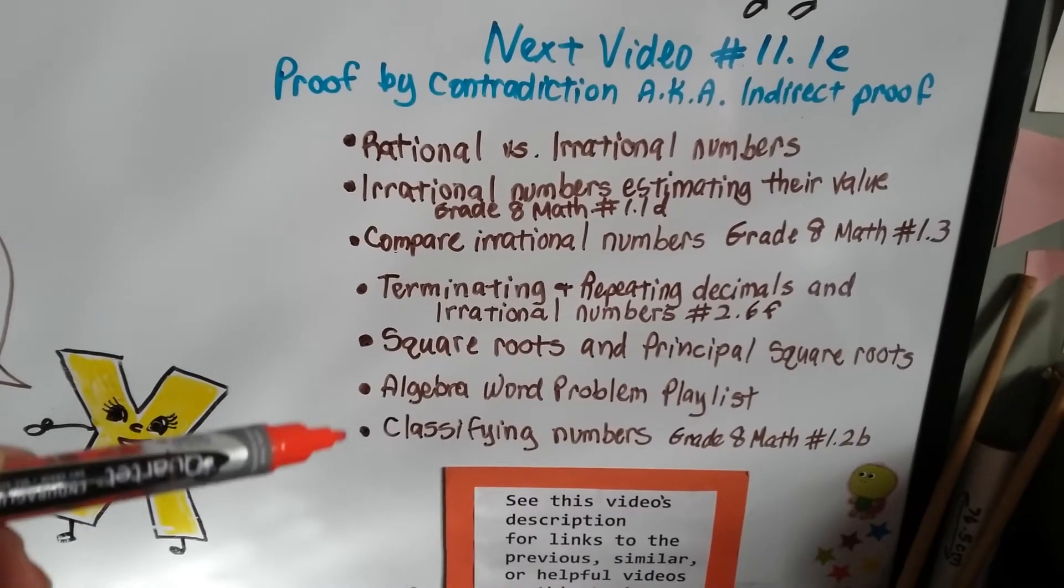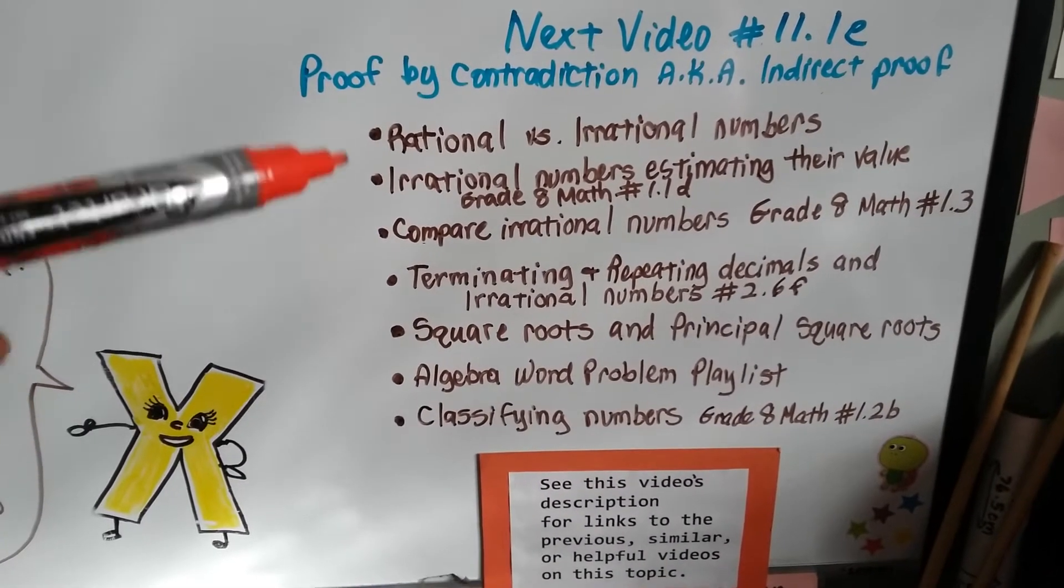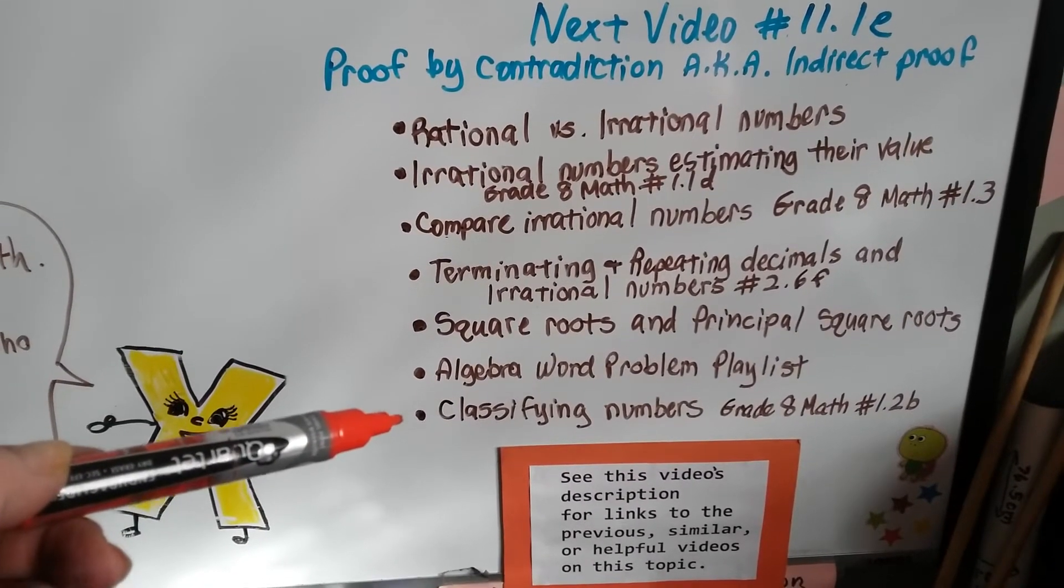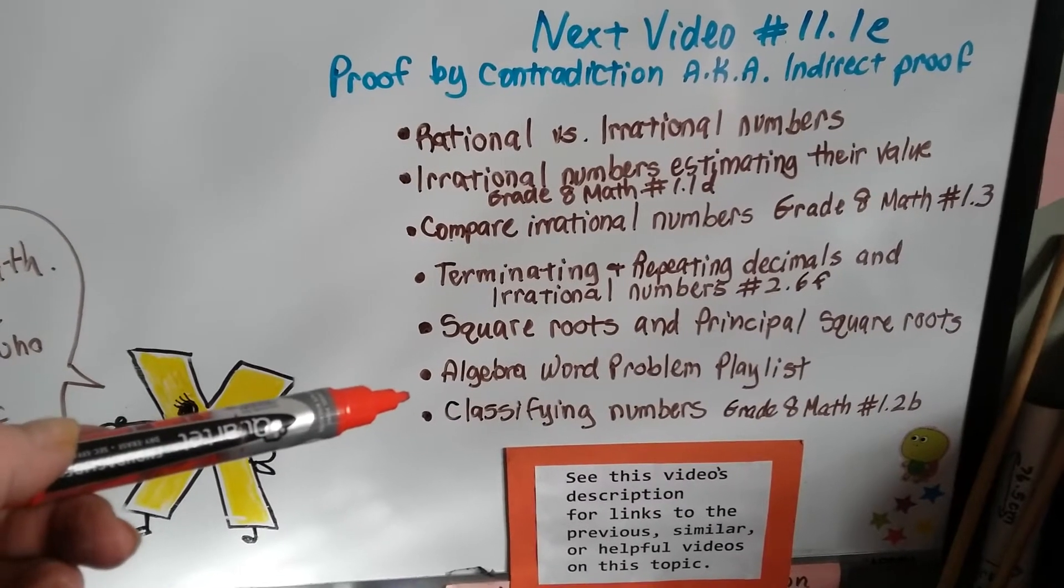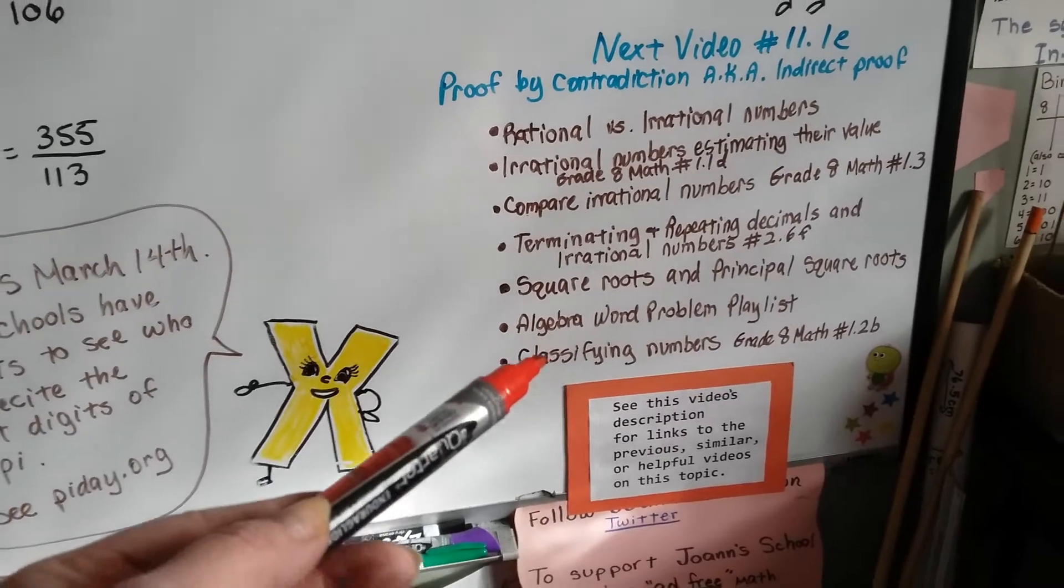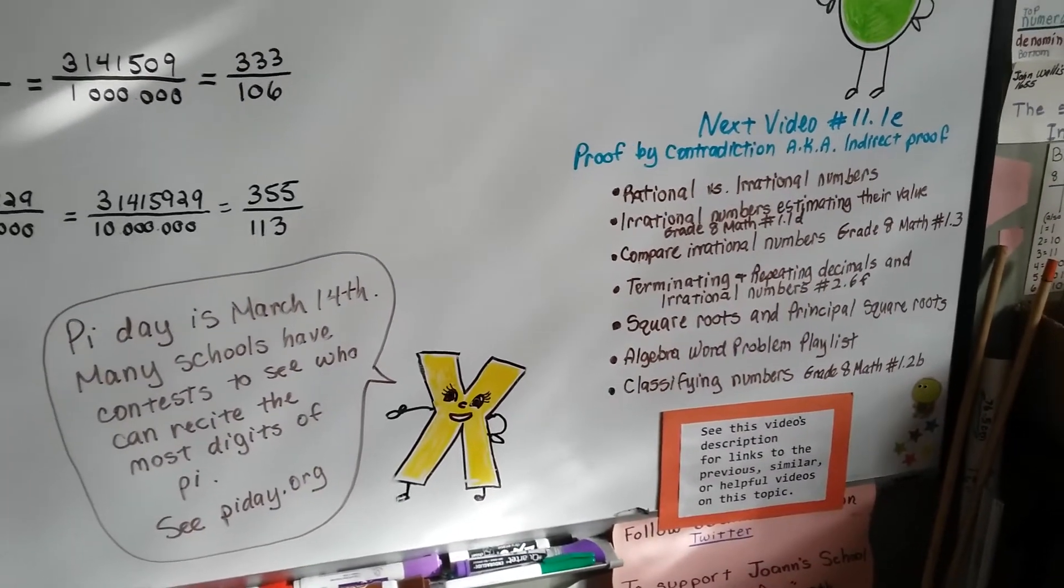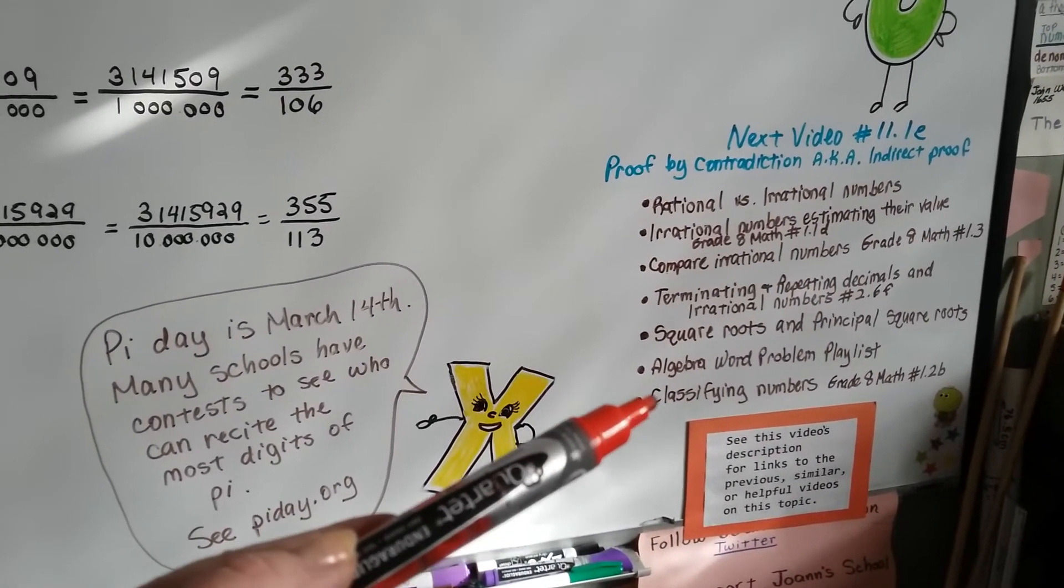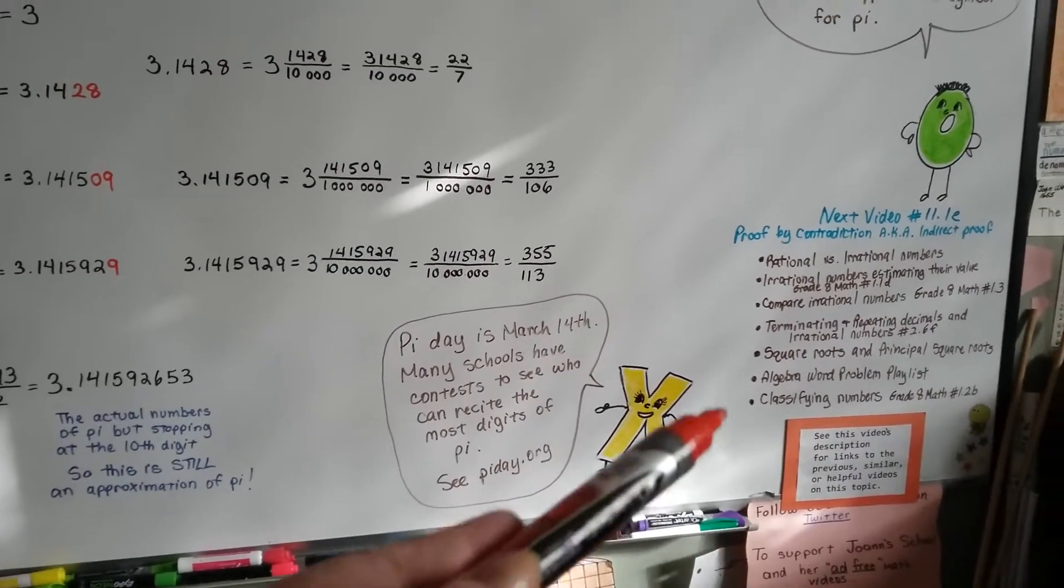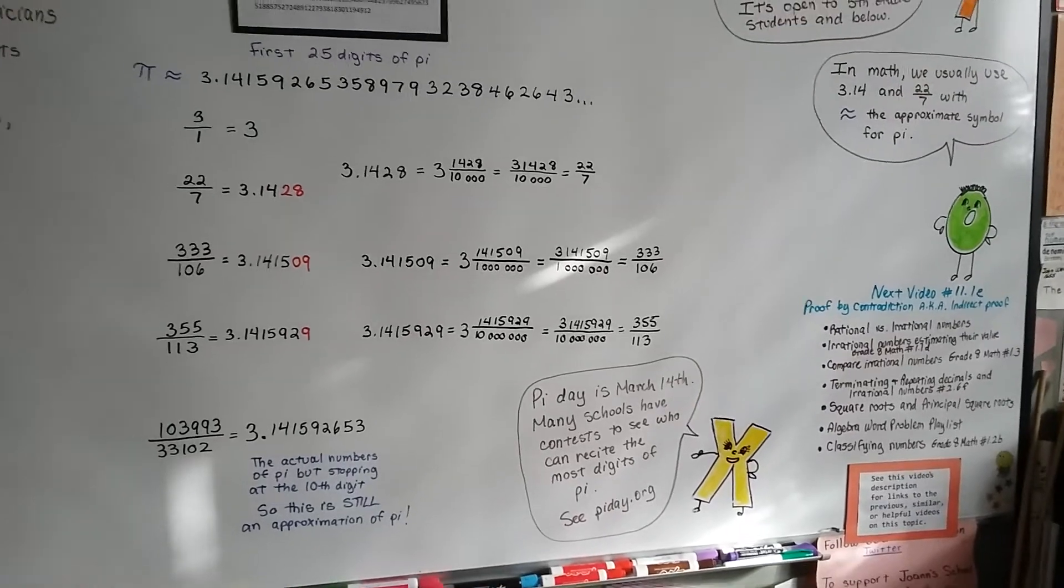And, if you want a link to any of the previous videos that we just finished, or if you want to see about rational and irrational numbers from the first chapter of grade 8 math, all those links are going to be in here. Even one on classifying the numbers, so you know the difference between a natural number, a whole number, a rational, an irrational, an integer, and all of that. There'll be a link for that in there, too.